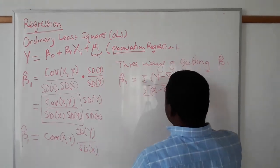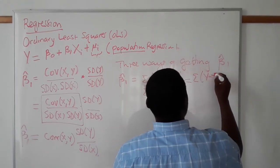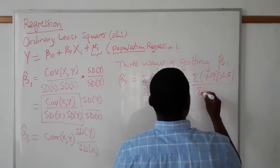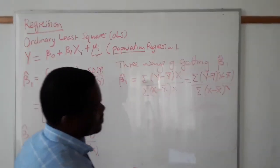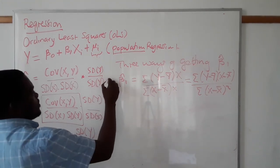Which can be rewritten just as sum of (Y minus Y̅)(X minus X̅) over sum of (X minus X̅) squared. So that's method one.